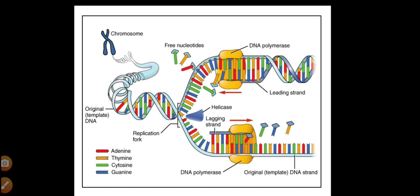One more enzyme is helicase. During DNA replication, the hydrogen bonds between the two strands must be broken. This can be achieved by the helicase enzyme, which breaks the hydrogen bonds between the pyrimidines and purines — between the two strands. That is why helicase breaks the hydrogen bonds of DNA.